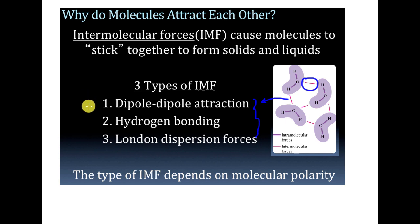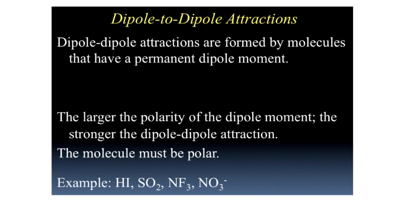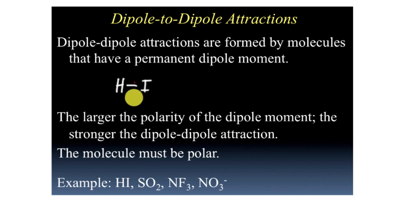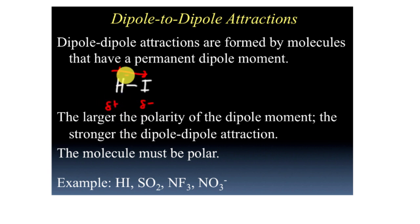Let's take a look at the first type, which is dipole-dipole attractions. Dipole-dipole attractions means that we're going to have a molecule that has a dipole attraction inside of it, meaning that it has a positive and a negative side. We have hydrogen and iodine. In that molecule, we know that the iodine is going to pull electrons with a greater force. So I get a partial negative on the iodine and a partial positive on the hydrogen.